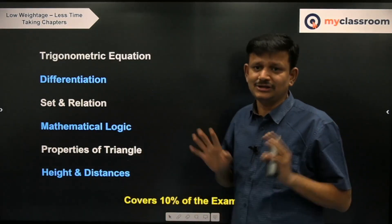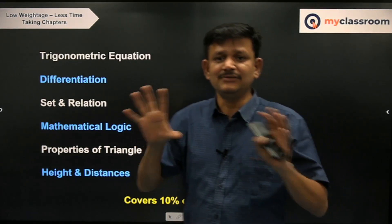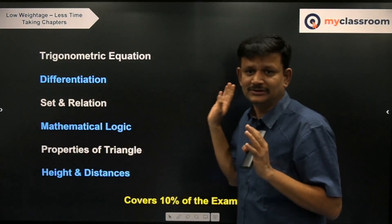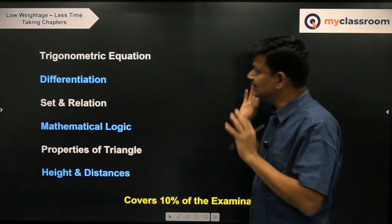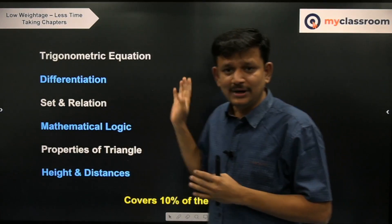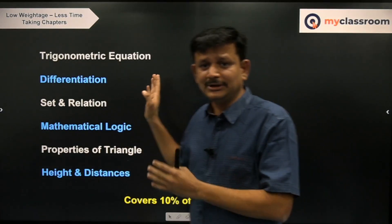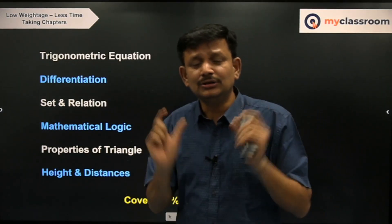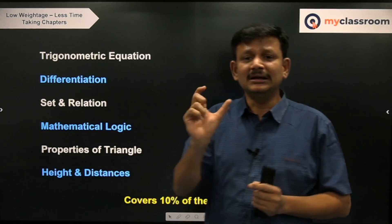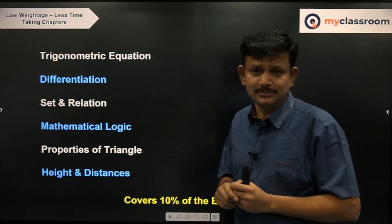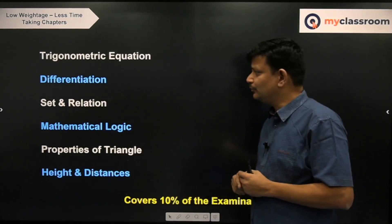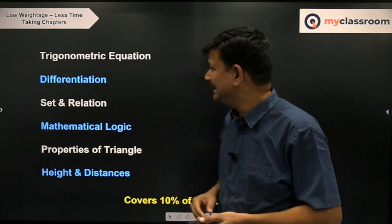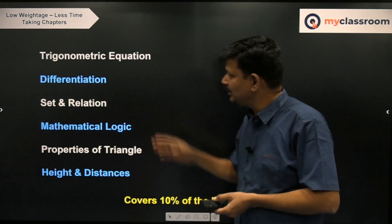Trigonometric equations — if you are able to find the general solutions, that will suffice. Nothing extra is required in terms of preparation of trigonometric equations. However, also look at trigonometric inequations for about 15 to 20 minutes: learn how to write the general formula whenever a trigonometric inequation is involved.